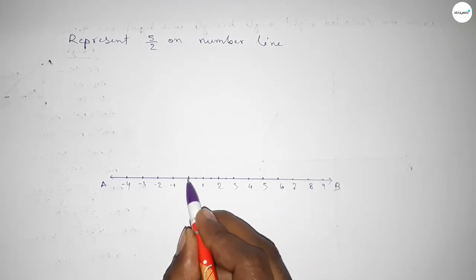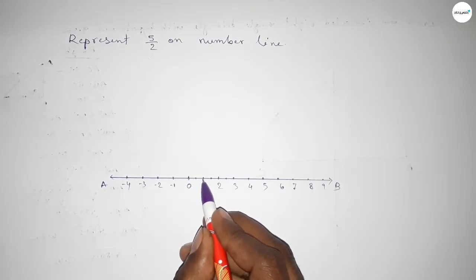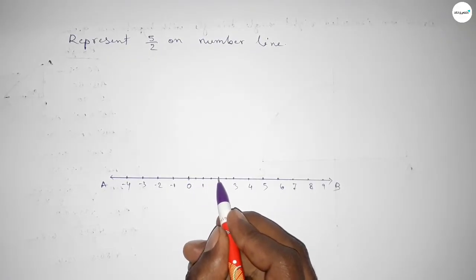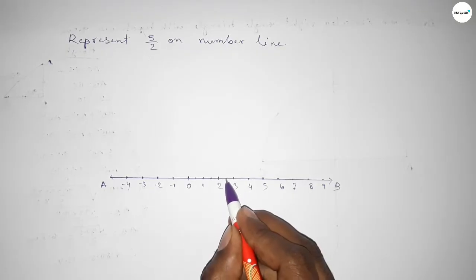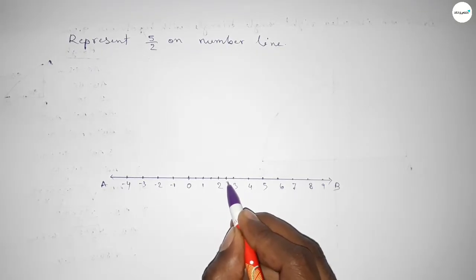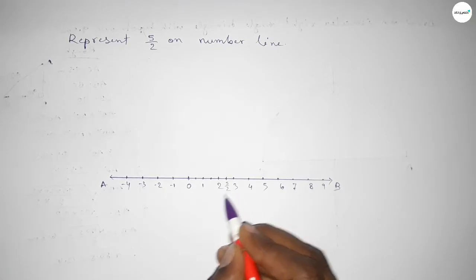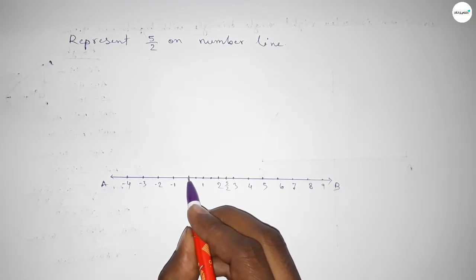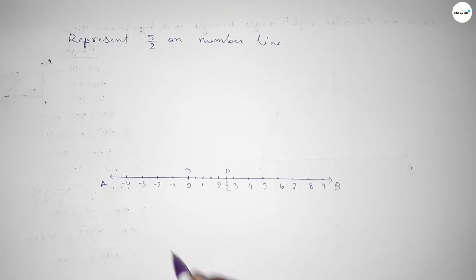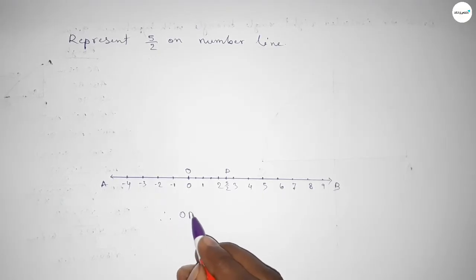Is one over two, this is three over two, and this is five over two. So this one, one over two, two over two, three over two, four over two, and this is five over two. So if we divided the length between zero to one, one to two, two to three by two, then we can get 5 over 2.